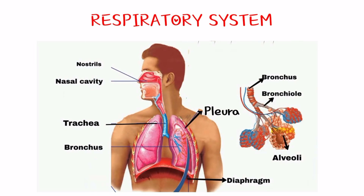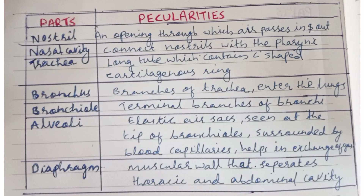Today we discussed the respiratory system. It consists of nostrils — the opening through which air passes in and out of the body. Then the nasal cavity, which connects the nostrils and pharynx. Then the trachea, which is a long tube covered by C-shaped cartilage rings. The bronchus is the branch of the trachea that enters the lungs and also has cartilage rings. The bronchioles are the branches of the bronchus. Then the alveoli — air sacs seen at the tip of the bronchioles where gas exchange takes place. The function of the respiratory system is to help take in oxygen from atmospheric air into the body.